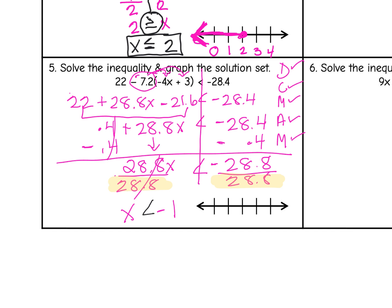I'll go ahead and graph the solution set. I have negative 1 in the middle, 0 and 1 going up the number line, and negative 2 and negative 3 going down. Because it's only x is less than — not less than or equal to — I plot it with an open circle, and x is less than, so I'm heading to the left. Any real number to the left of negative 1 on the number line makes this equation true.